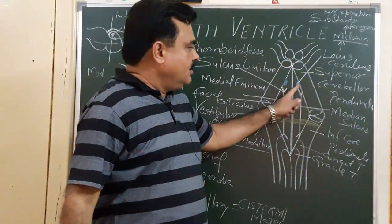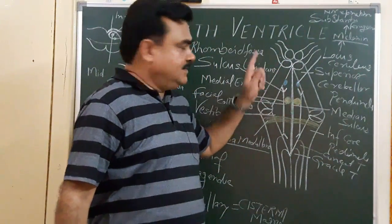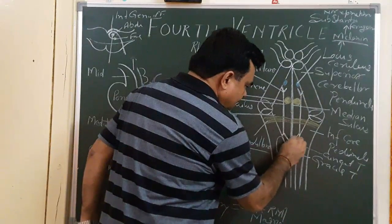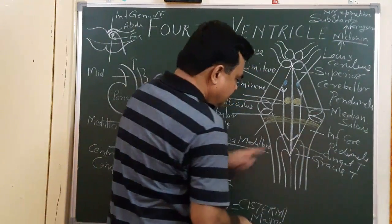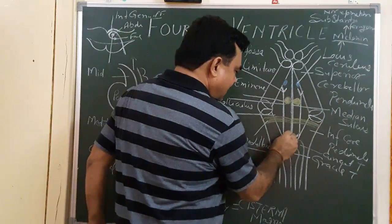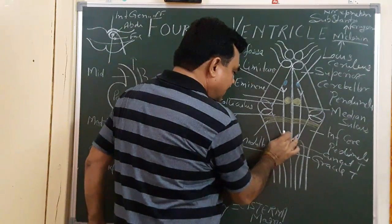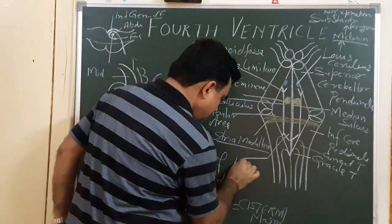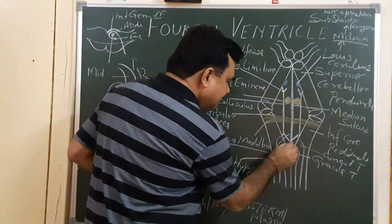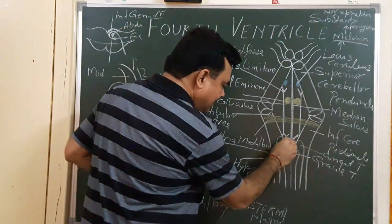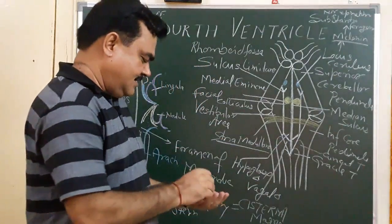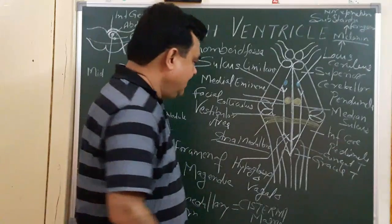Two important triangles are formed here. One is the hypoglossal triangle, where the hypoglossal nucleus is present. The other is the vagal triangle. So two triangles are present: the hypoglossal triangle and the vagal triangle.